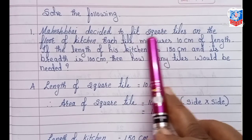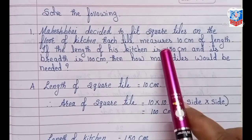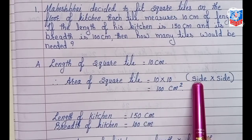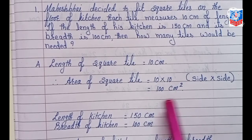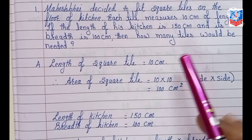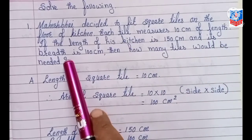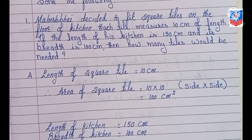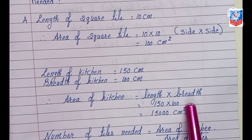The square tile has a length of 10 centimeter. Area of square tile is equal to side into side, that is 10 into 10, which is 100 centimeter square. The length of the kitchen is 150 centimeter and its breadth is 100 centimeter. Area of kitchen is equal to length into breadth, that is 150 into 100, which is 15,000 centimeter square.